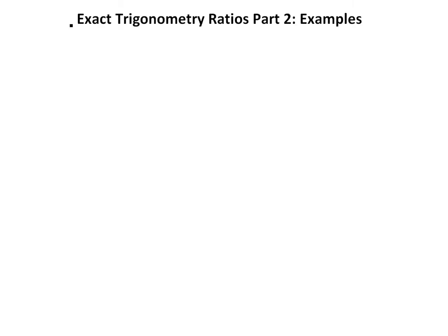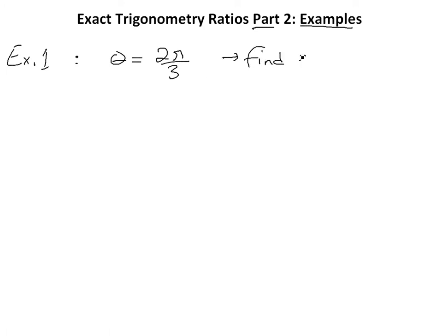Alright, it's time for another math easy solution. Today we're going to go further on the exact trig ratios and trigonometry that I explained in my earlier videos, and we're going to do some examples. We'll do Example 1. We're given an angle theta equals 2 pi over 3, and we want to find the exact trig ratios in terms of sine, cosine, and tangent.